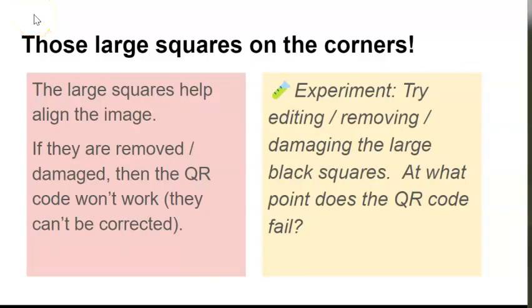Another thing that you can try is taking the original image, putting it into a graphics editor, and defacing those large squares on the corners. Start small, save the images, and see what happens. It turns out that those large squares help us align the image, and if they are removed or damaged, then the QR code won't work and those errors can't be corrected.